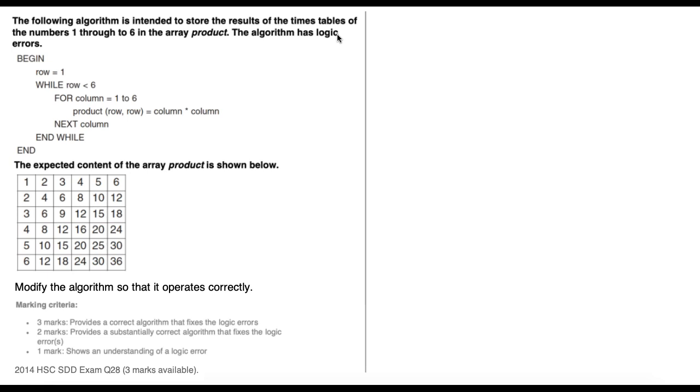Hi, in this video we are going to look at a question from the 2014 HSC Software Design and Development exam. This is question 28. It's an algorithm problem and it's worth three marks. The following algorithm is intended to store the results of the times tables of the numbers one through to six in the array product.